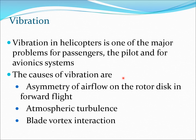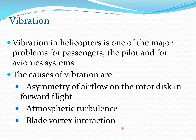Before we get into vibration minimization methods, let's look at the sources of vibration and understand the genesis of vibration in the helicopter system. The causes of vibration in a typical helicopter are due to several physical reasons: the first is the asymmetry of airflow on the rotor disk in forward flight, the second is atmospheric turbulence, and the third is blade vortex interaction, sometimes known as BVI.